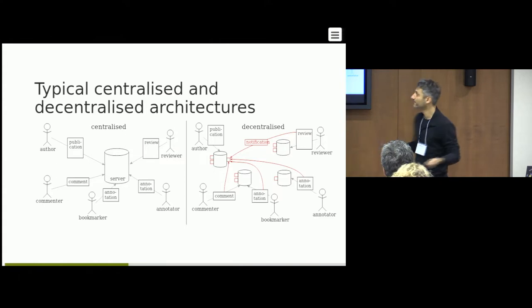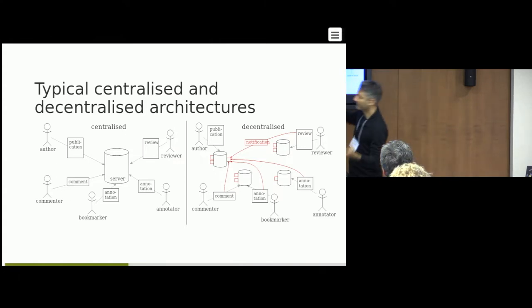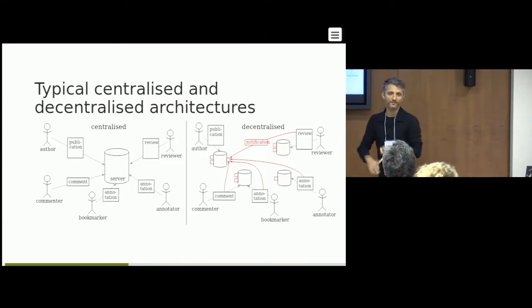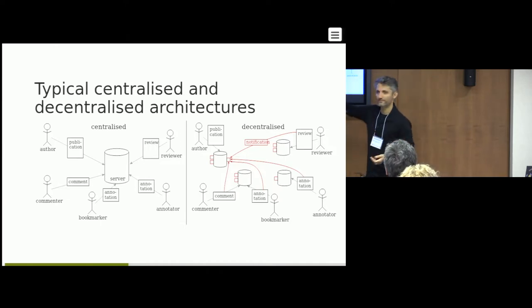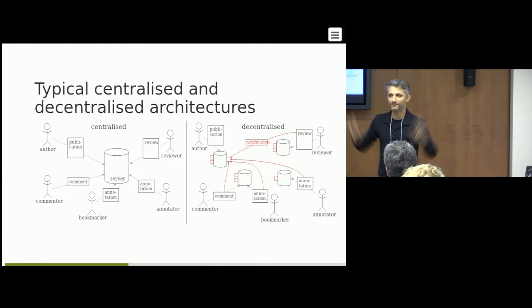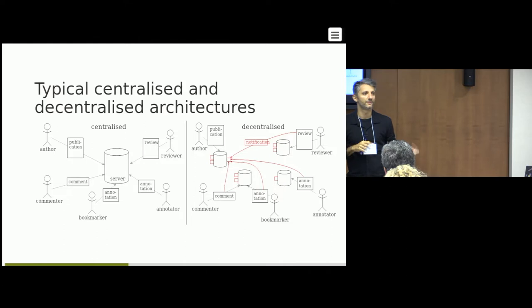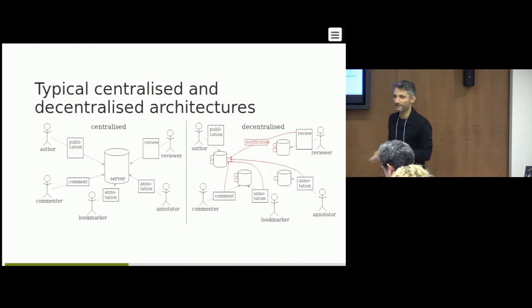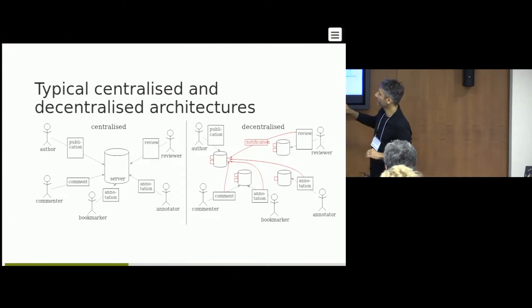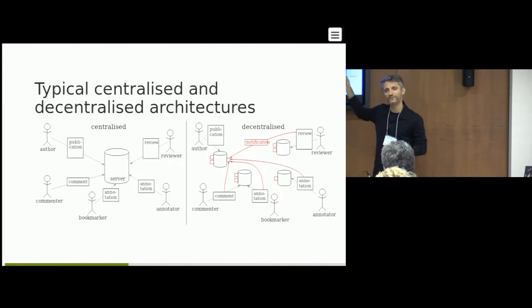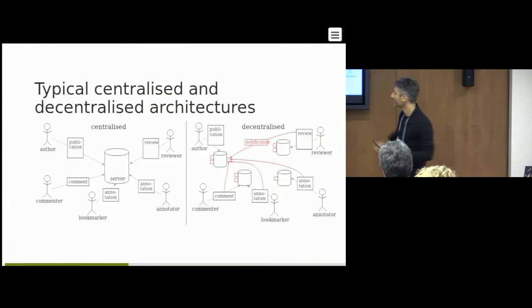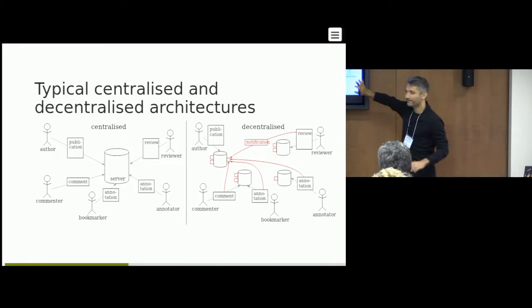A high-level overview of the difference between centralization and decentralization: a centralized system has a central server that everybody hops on to create profiles, manage data, and do read/write operations. Anything from Facebook to GitHub to virtually any third-party publisher would fall into this category. ORCID, Hypothes.is — those also fall in that category because you're required to create profiles or store annotations on their server. That may or may not be a good thing — it's up to decision makers — but we're trying to see if we can shift the paradigm.